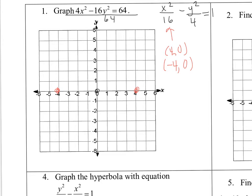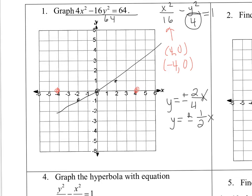All of these are centered at the origin, so graph the vertices there. Now graph the asymptotes: y equals plus or minus the change in y over the change in x. Taking the square root of 4 gives 2, and the square root of 16 gives 4, so the asymptotes are y equals plus or minus one-half x. Graph a slope of one-half in both directions. The hyperbola will be squeezed in between these two asymptotes and must pass through the vertices.